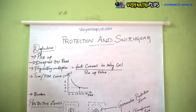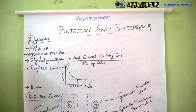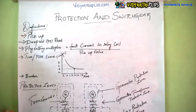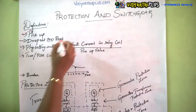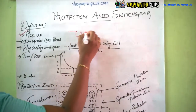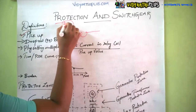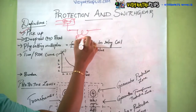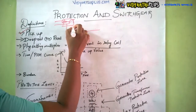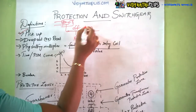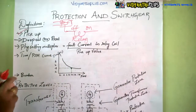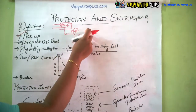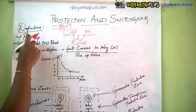The first definition is pick up, which is concerned with the relay. The relay senses the fault via a current transformer and goes from off to on position. The minimum actuating current at which the relay goes from off to on position is called the pick up value.